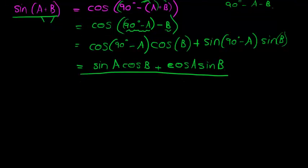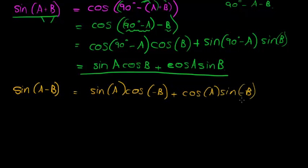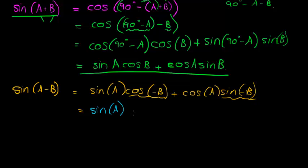For sine of A minus B, let's take the simple route again. That is sine A cos(negative B) plus cos A sine(negative B). Cos of a negative angle in the fourth quadrant is positive, so no sign change needed there. But sine of a negative angle is negative in the fourth quadrant, so we multiply by negative one, giving sine A cos B minus cos A sine B.